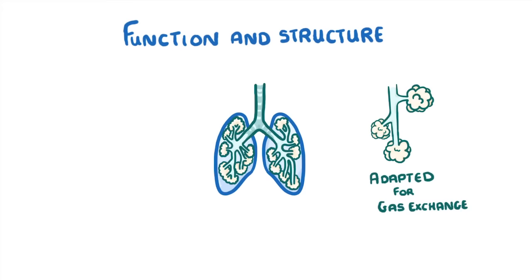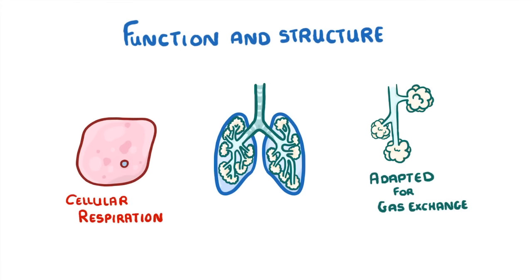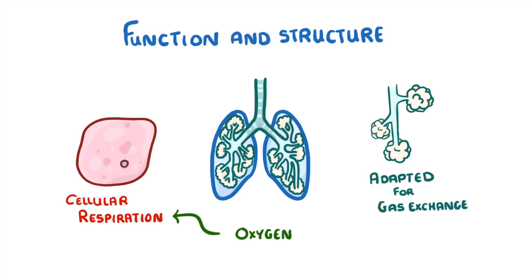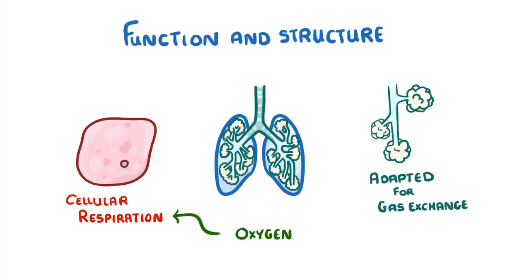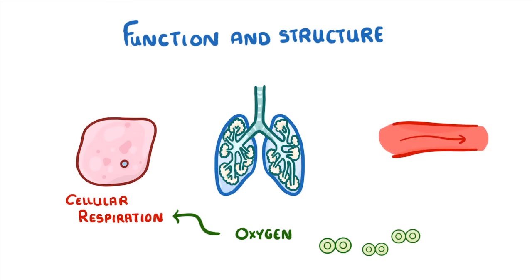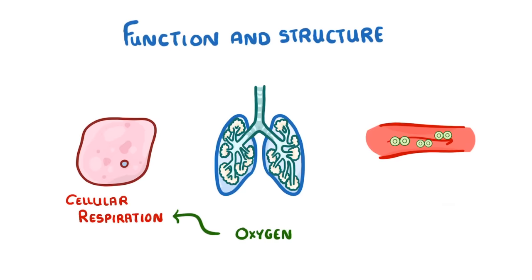In order to get the energy that they need to function, all of our cells must carry out the process of cellular respiration, and for that they need oxygen. This is where the lungs come in. Their role is to get the oxygen that we need from the air all around us into our bloodstream, where it can be transported to the rest of the body.